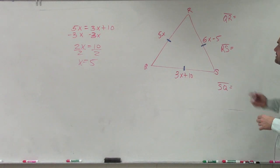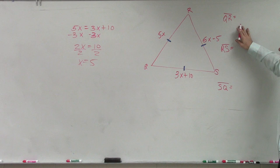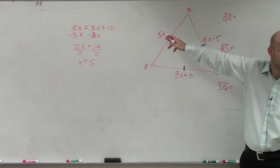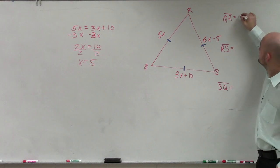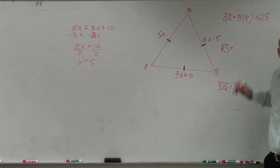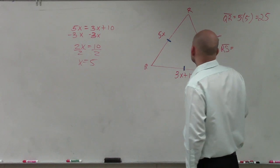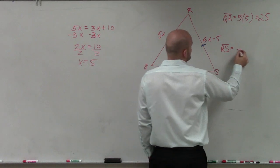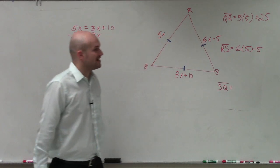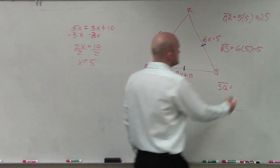So now, if I want to find the value of QR, the value of line QR is 5x. Well, x is equal to 5. So it's 5 times 5, which equals 25 units. For RS, that's 6 times 5 minus 5. 6 times 5 is 30, minus 5 is 25.